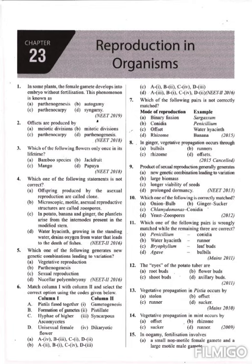Next question: which one of the following flowers only once in its lifetime? Bamboo species produce flowers only once in their lifetime. The average lifespan of bamboo species is 50 to 100 years. After flowering, the bamboo species will not exist. Another example is Neelakurinji, where flowering takes place once within 12 years.